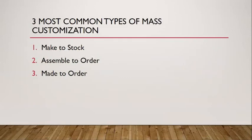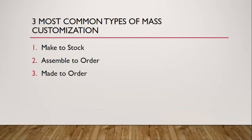These are the three most common types of mass customization. Number one is make-to-stock: products are made in advance to have stocks — for example, smartphones, which are manufactured ahead of time and then stocked. The second is assemble-to-order: products such as computers in which the buyer can specify what parts should be assembled. The third is make-to-order: just like in restaurants, the product will be made only when the customer orders.